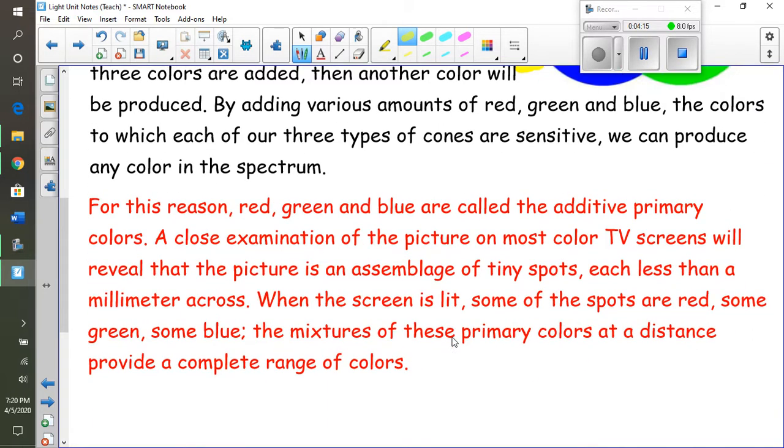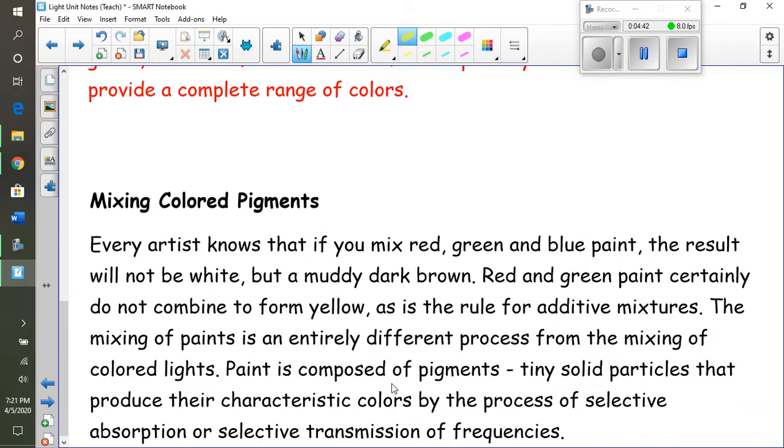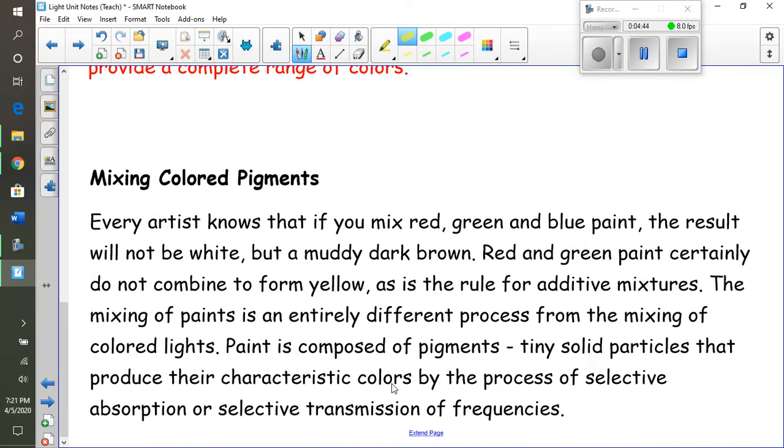For this reason, red, green, and blue are called the additive primary colors. If you take a look at your cell phone or TV screen and look at it very closely, you'll find that there's just tiny little spots less than a millimeter across. When the screen is lit, some of these spots are red, some are green, some are blue. The mixture of these primary colors at a distance provides a complete range of colors. So that's mixing light.